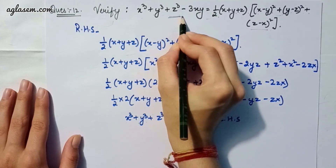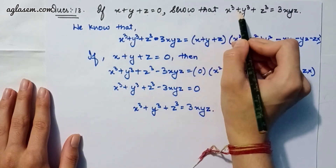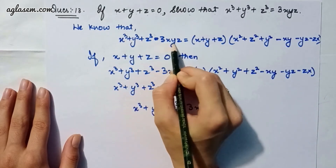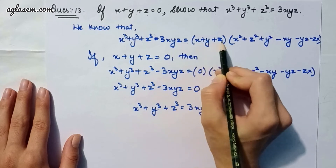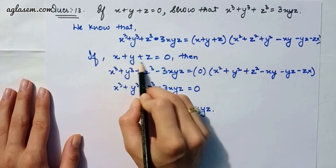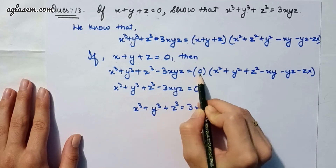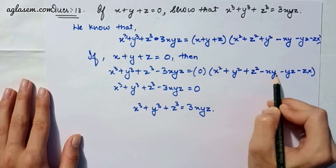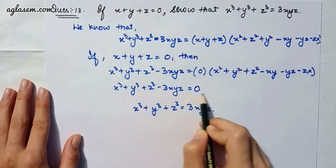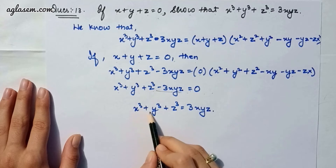Question 13: Verify that if x + y + z = 0, then x³ + y³ + z³ = 3xyz. We know that x³ + y³ + z³ - 3xyz = (x + y + z)(x² + y² + z² - xy - yz - zx). Since x + y + z = 0 (given), x³ + y³ + z³ - 3xyz = 0 × (x² + y² + z² - xy - yz - zx) = 0. Therefore x³ + y³ + z³ = 3xyz.